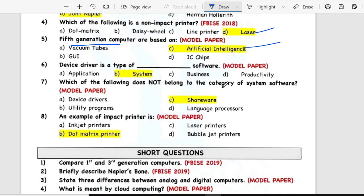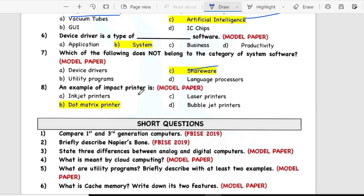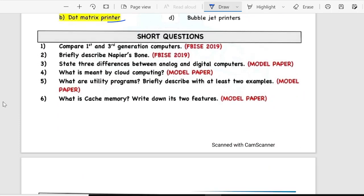Which of the following does not belong to the category of system software? Shareware. And eighth, example of impact printer is in model paper dot matrix printer.